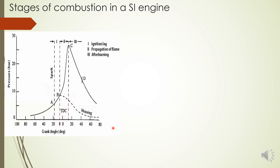In the p–θ diagram of an actual engine, pressure ranges from about 1 bar to around 30 bar, with TDC marked. Three stages are identified: the first is ignition lag (A to B), the second is propagation of flame (B to C), and the third is after burning (C to D).